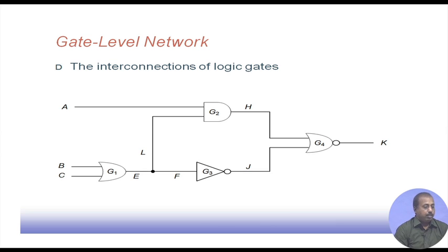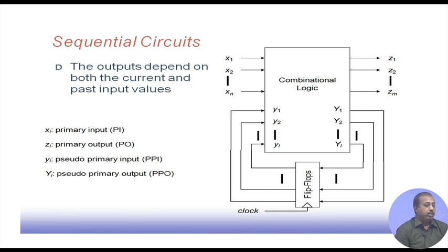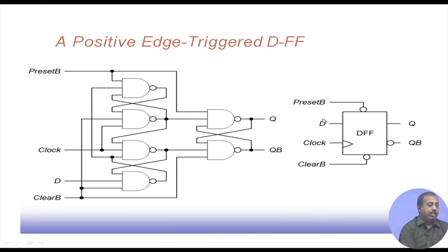The first simulation model is the gate level network — an interconnection of logic gates. For sequential circuits, the output depends on both current and past input values; the model includes primary inputs, primary outputs, pseudo primary inputs (yi lines), and pseudo primary outputs (Y lines). A positive edge-triggered D flip-flop may be represented as an actual logic gate circuit that models the behavior when clear or preset lines are asserted.